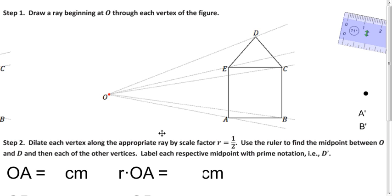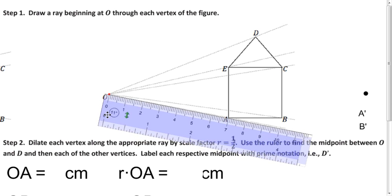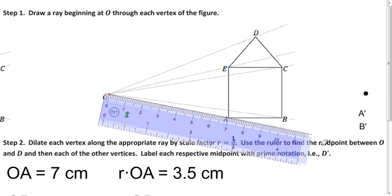To figure out where the points in the image are, you measure those distances and multiply them by your scale factor. Here the distance OA is 7 centimeters, so multiplying by the scale factor of one half: one half times 7 is 3.5 centimeters. So I place point A prime right here at 3.5 centimeters on that ray.